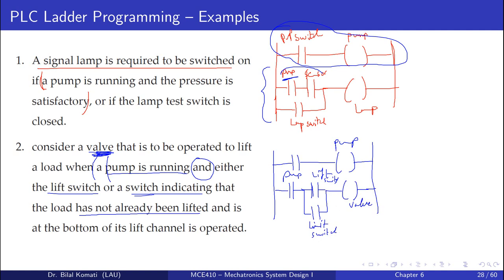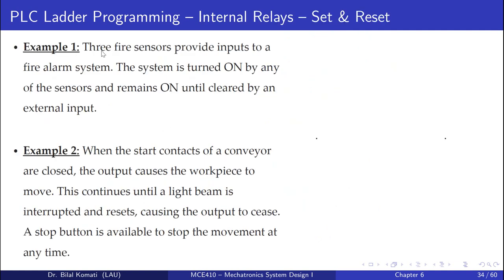The next example: three fire sensors provide inputs to a fire alarm system. The system is turned on by any of the sensors and remains on until cleared by an external input. Once any sensor is activated, the alarm turns on and stays on until the external input is pressed. We use a normally closed contact for the external input so current passes until that button is pressed, which breaks the contact.